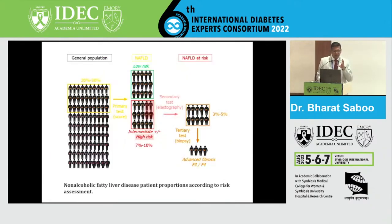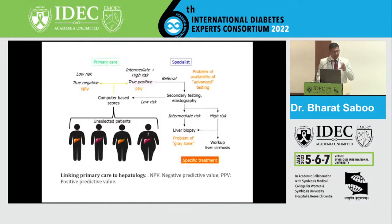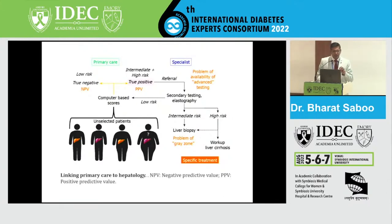This stepwise approach helps reduce the burden of testing. After the primary FIB-4 score, approximately 20–30% of patients may have a higher score warranting secondary testing with elastography. Of those, only 3–5% will have elastography out of range, which further reduces screening costs in a country like India. Only patients with elastography out of range are then referred for biopsy. Low-risk patients are clearly excluded, intermediate and high-risk patients are referred for secondary testing and stratified for liver biopsy or workup for liver cirrhosis.